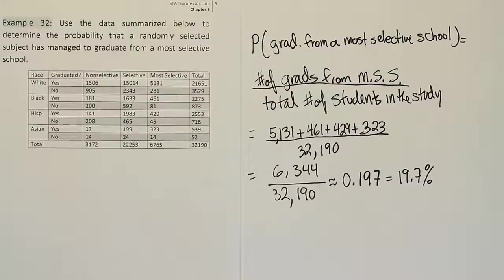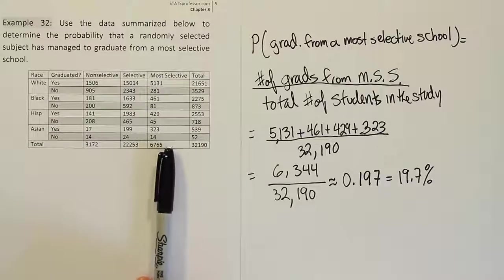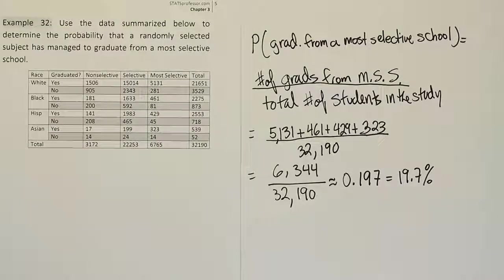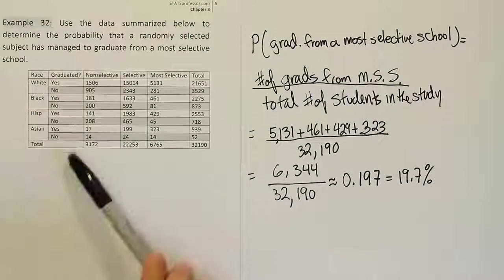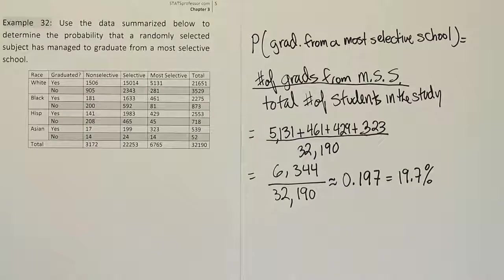It looks like the actual effect here in the data shows that anyone, whether you're white, black, Hispanic, or Asian, anyone who attends the most selective school has a higher likelihood of being a graduate than from these other schools.